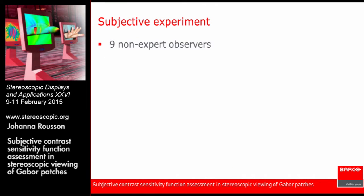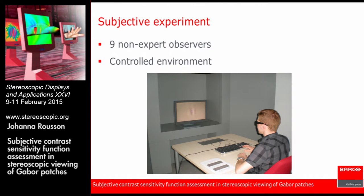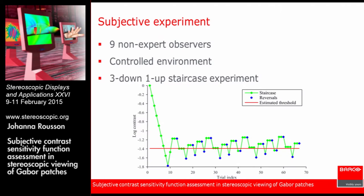For the subjective experiments, we used nine non-expert observers who were all tested for their vision and stereo acuity. We used a controlled environment to ensure uniform psychophysical conditions across all tests. To find the contrast threshold, we used a 3-down 1-up staircase experiment. The staircase consists of either decreasing or increasing the contrast of the displayed stimulus depending on the observer's response to the preceding stimulus.